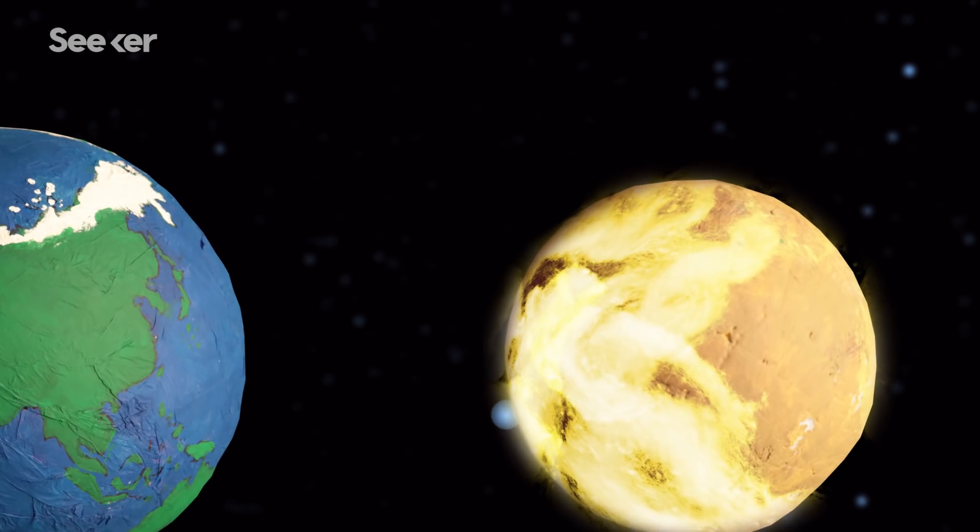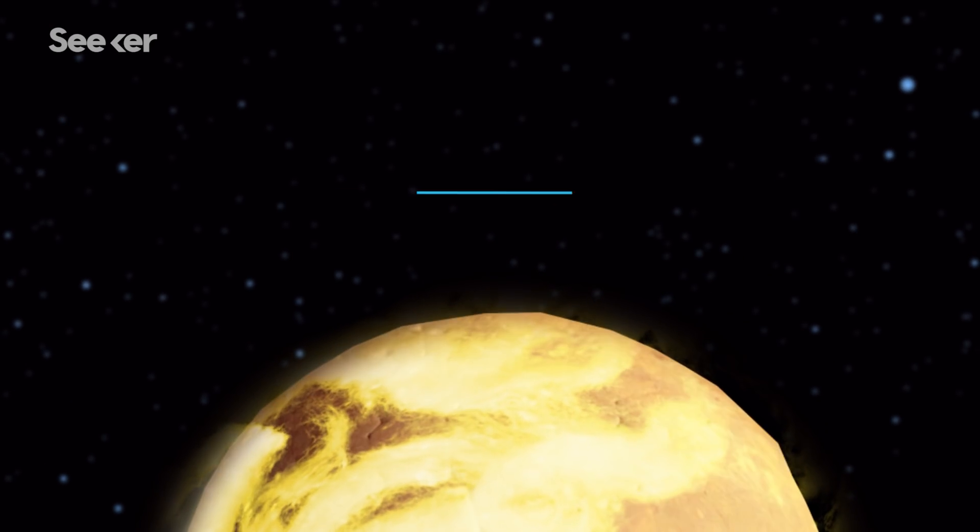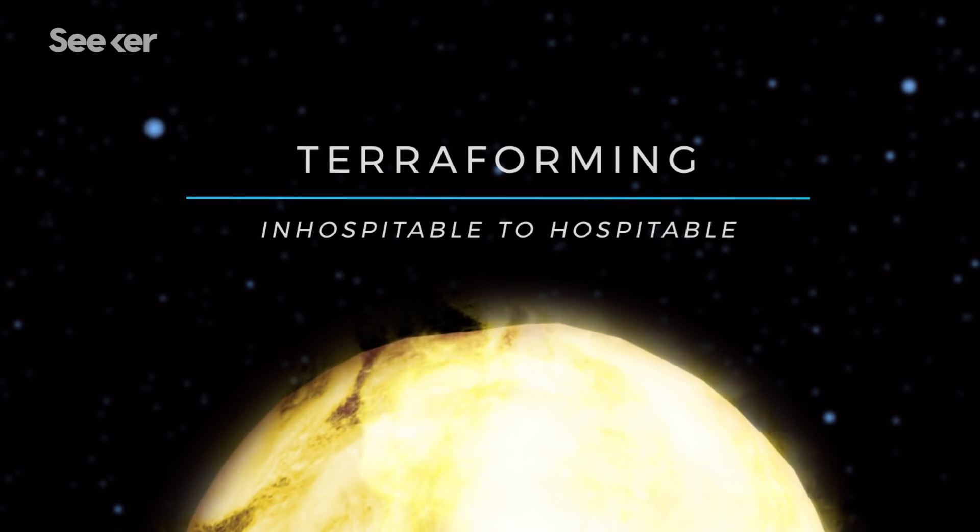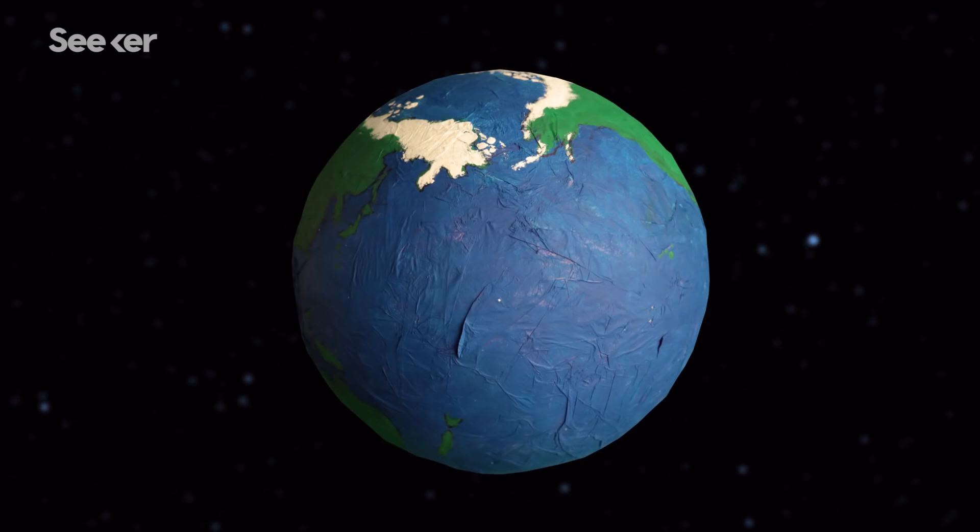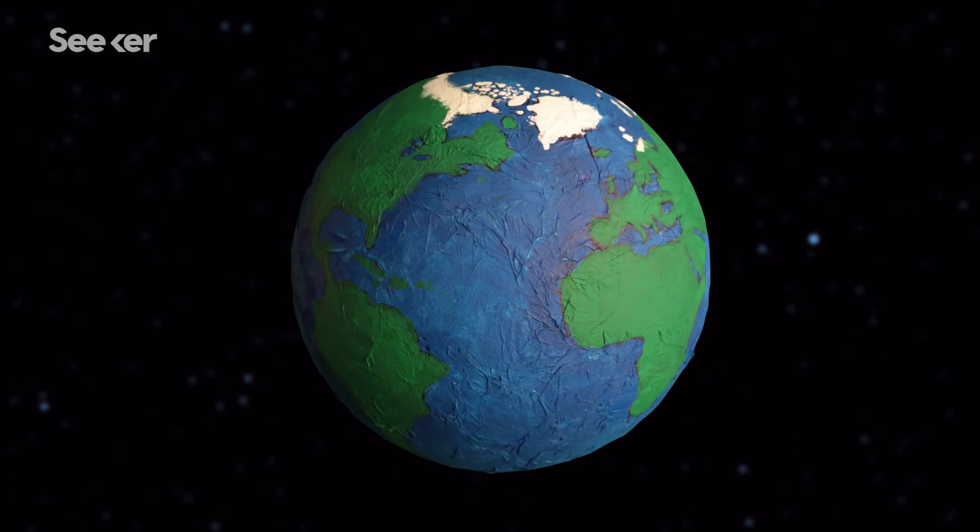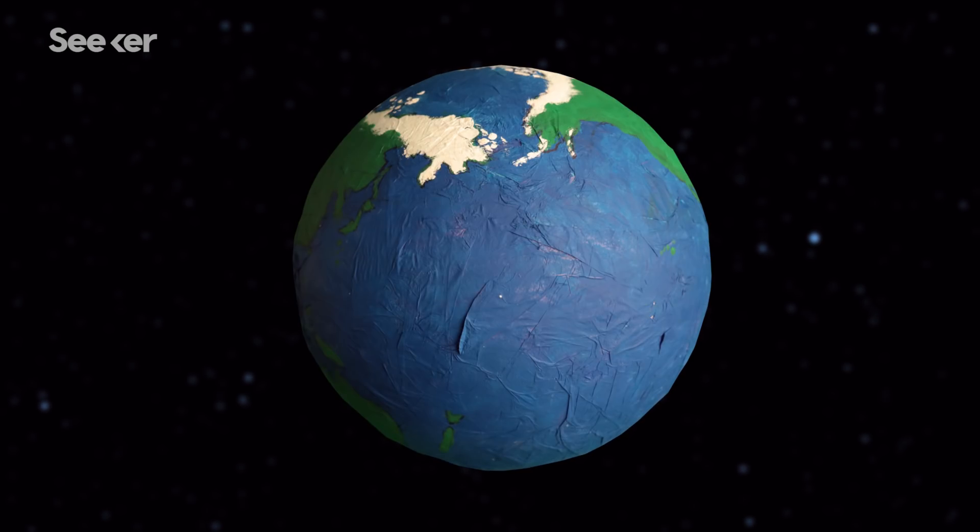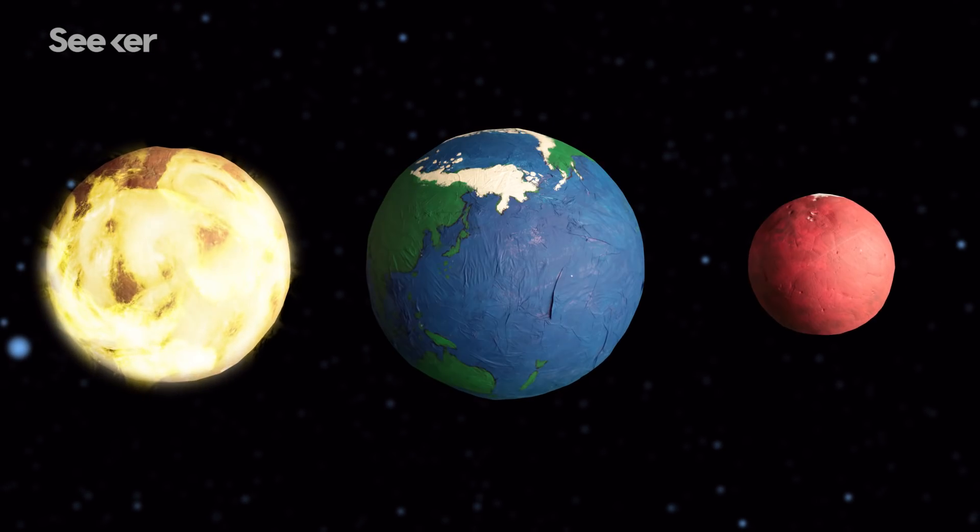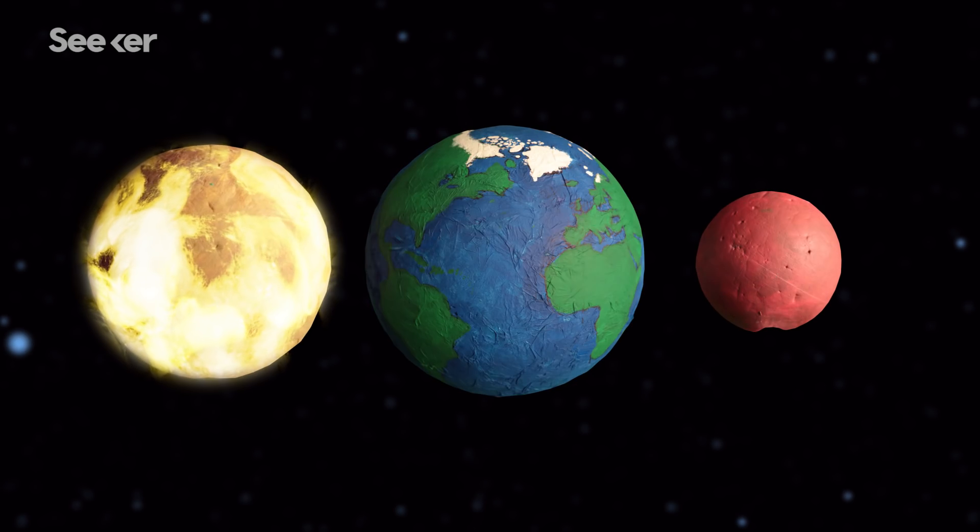Even so, Venus is a potential candidate for terraforming, which is a process that turns an inhospitable planet into one that could support life. As we continue to oversaturate resources on Earth, scientists at NASA and entrepreneurs like Elon Musk are looking to turn other planets into our new homes. So what are some of the crazy ideas to terraform our nearest neighbors, Venus and Mars?